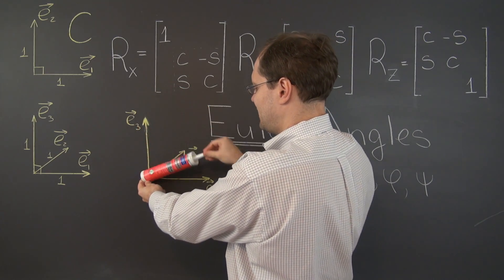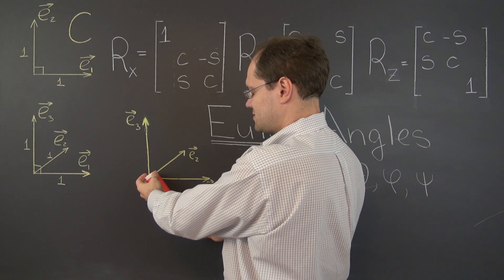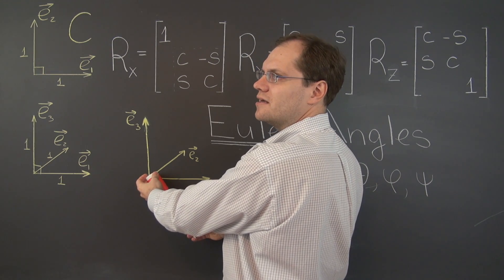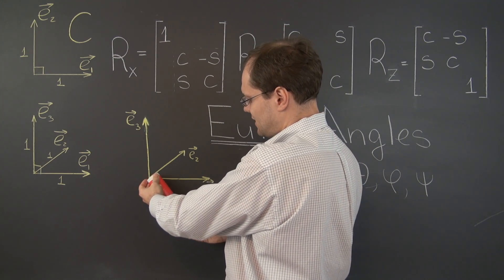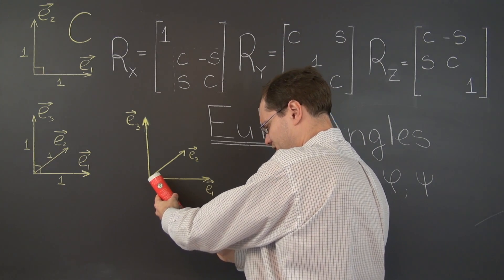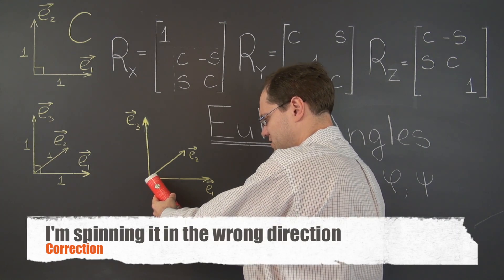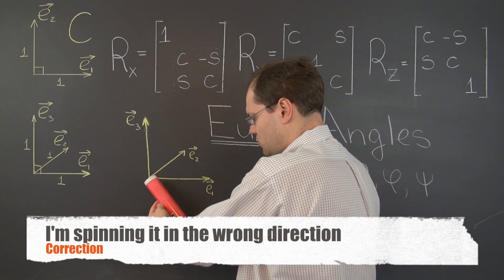So from this orientation, we will spin it like this. This is once again, what is it, 3 quarters pi, something like that. And now, once again, being very careful in the counterclockwise direction until the barcode faces you.